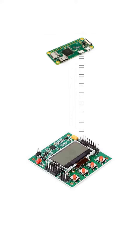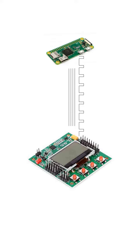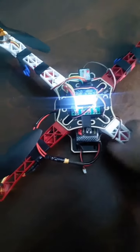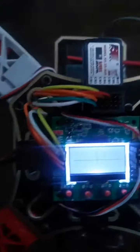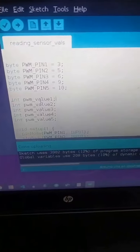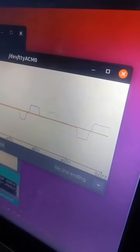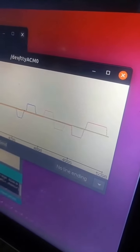For these joystick movements, if we can somehow simulate or mimic the exact signals generated by the receiver from our Raspberry Pi, then we can write Python scripts in our Pi, interface it with the KK board, and create autonomous movements for our drone. The board has an inbuilt gyroscope and accelerometer sensor which it uses for position feedback.